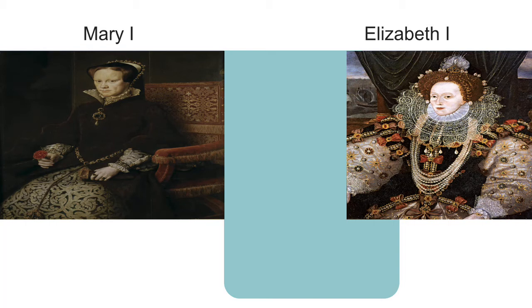While Mary was queen, many Protestants were burned for their beliefs. She also put her half-sister Elizabeth, the daughter of Henry and Anne Boleyn, into prison in the Tower of London. Mary died in 1558, and her half-sister Elizabeth became the queen of England, Elizabeth I.